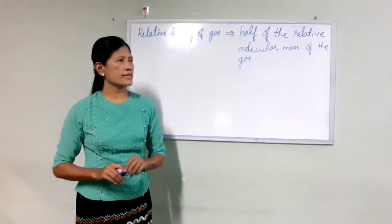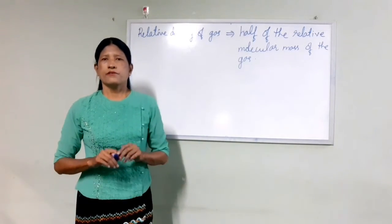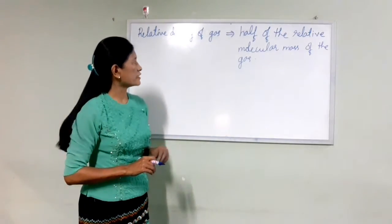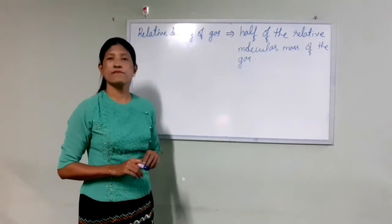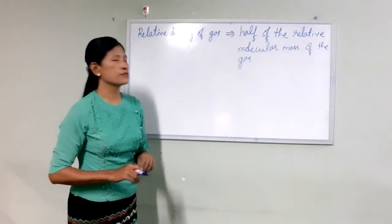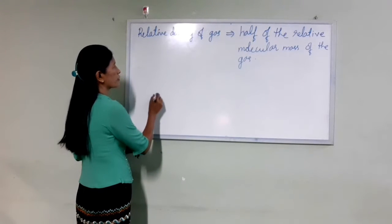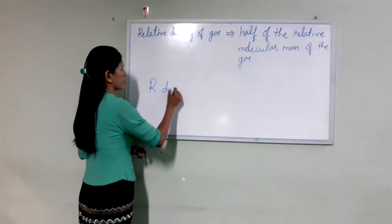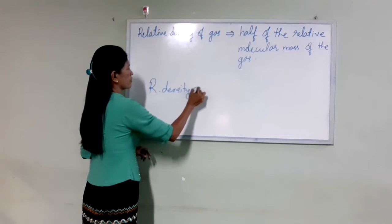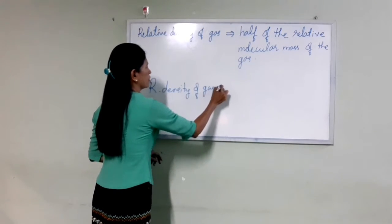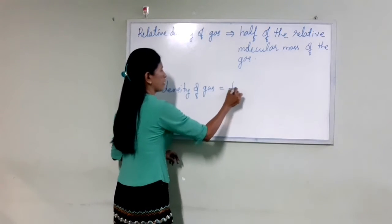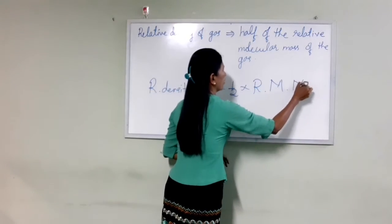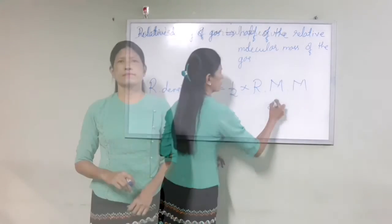Relative density of the gas is equivalent to half of the relative molecular mass of the gas. Relative density of the gas is equivalent to the relative molecular mass of the gas.